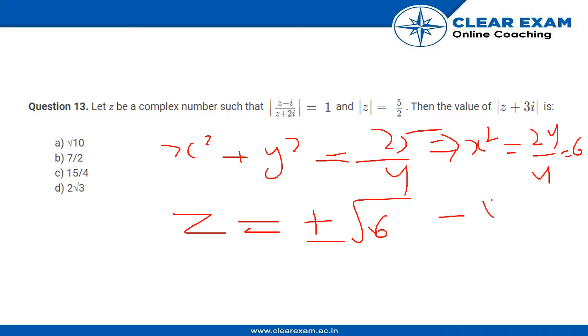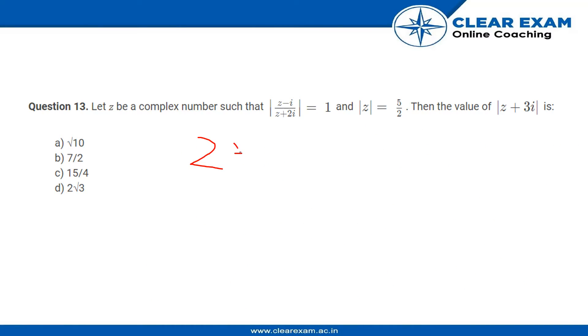|z + 3i| = √(6 + 25/4), which on solving gives 7/2. So our answer equals 7/2, and we have option b which has 7/2, so that is our answer.